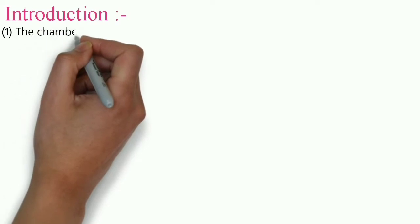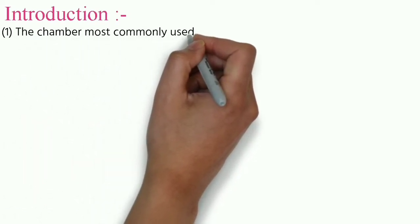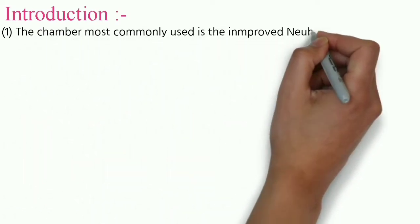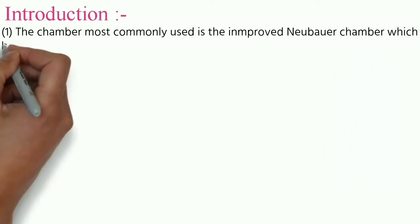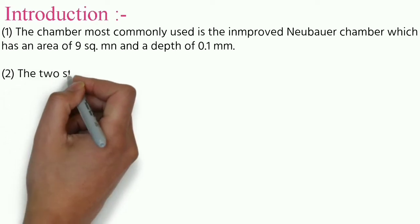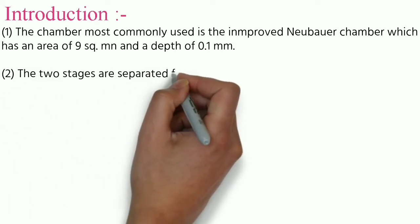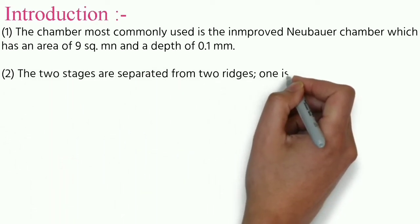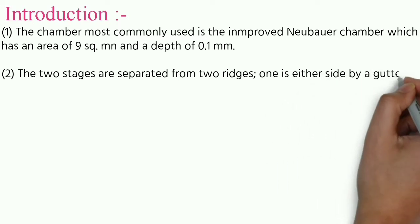The chamber most commonly used is the improved Newbourg chamber which has an area of 9 square mm and a depth of 0.1 mm. The two stages are separated by two ridges, one on either side by a gutter.